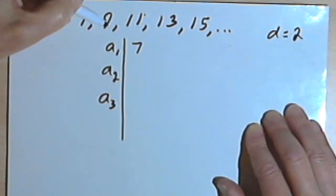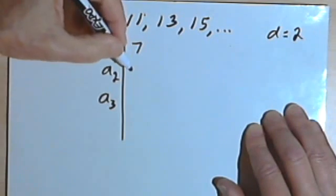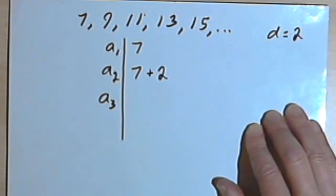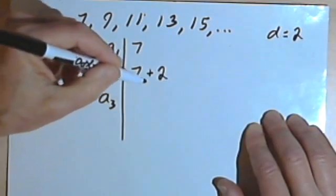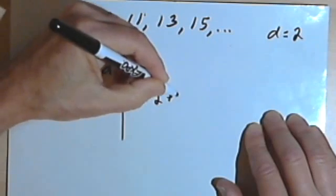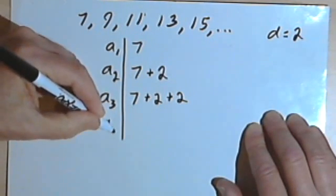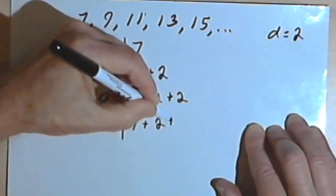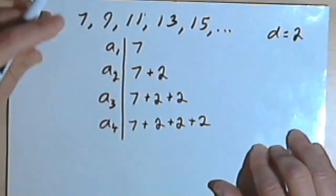The a sub 2, the second term is a 9. But I get 9 by adding 2 to the previous term. So let's write that as 7 plus 2. Now if I want to get the third term, the a sub 3, I would add a 2 to that. So that would be 7 plus 2, plus 2 more. For a sub 4, I would write 7 plus 2, plus 2, the previous term, and then once again, plus 2.